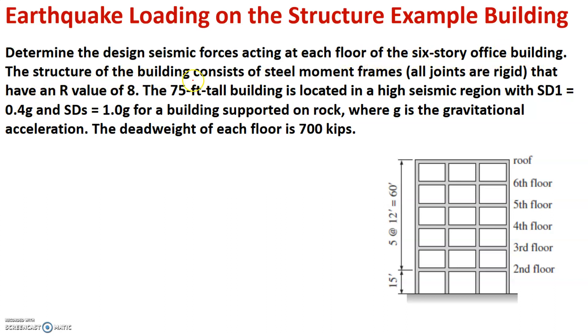The structure of the building consists of steel moment frames. All joints are rigid that have an R value of 8. The 75 feet tall building is located in a high seismic region with SD1 equal to 0.4g and SDs equal to 1.0g, for a building supported on rock where g is the gravitational acceleration and the dead weight of each floor is 700 kips.